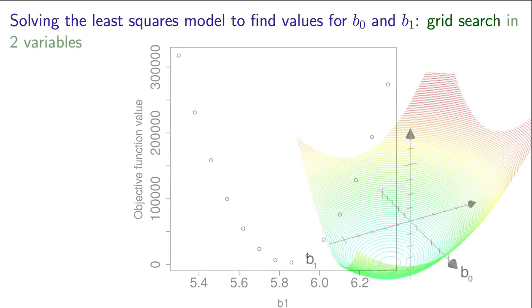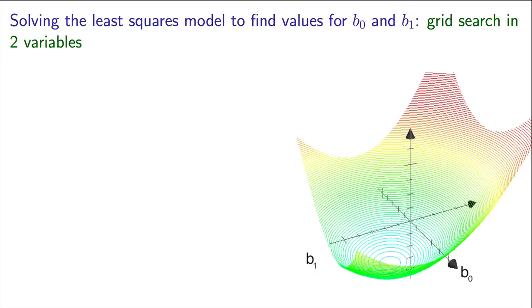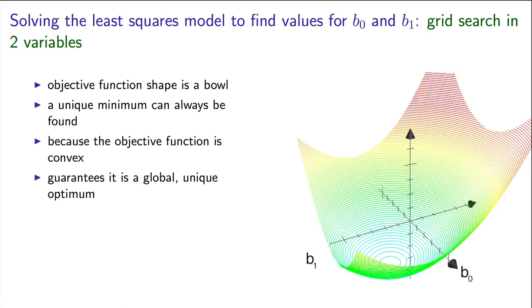But a general least squares model has two variables, b0 and b1, and the same approach applies. Except now we don't have a quadratic function anymore, we have a quadratic bowl shape. The minimum will be at the bottom of that bowl.